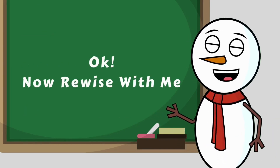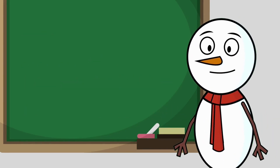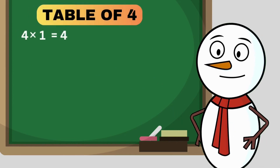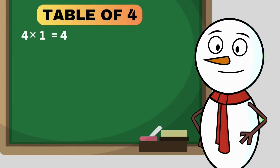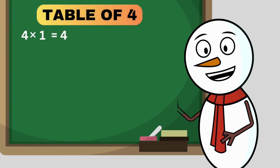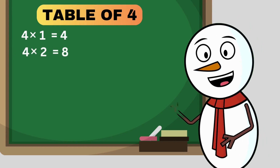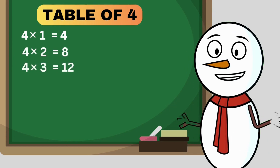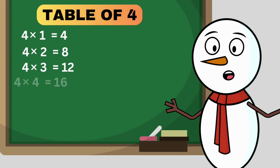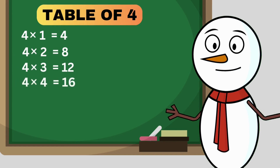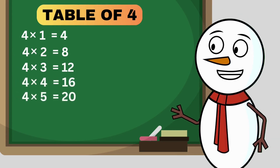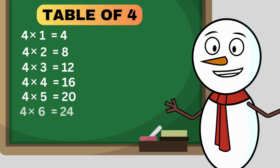Now revise with me. Table of 4: 4 times 1 is 4. 4 times 2 is 8. 4 times 3 is 12. 4 times 4 is 16. 4 times 5 is 20. 4 times 6 is 24.